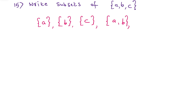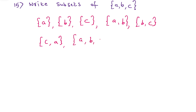Now 2 elements together: {A,B}, {B,C}, {C,A}. Note that {A,B} and {B,A} are the same, {B,C} and {C,B} are the same, {C,A} and {A,C} are the same. Then all 3 elements together: {A,B,C}. And also include the empty set, because every empty set is a subset of every set.